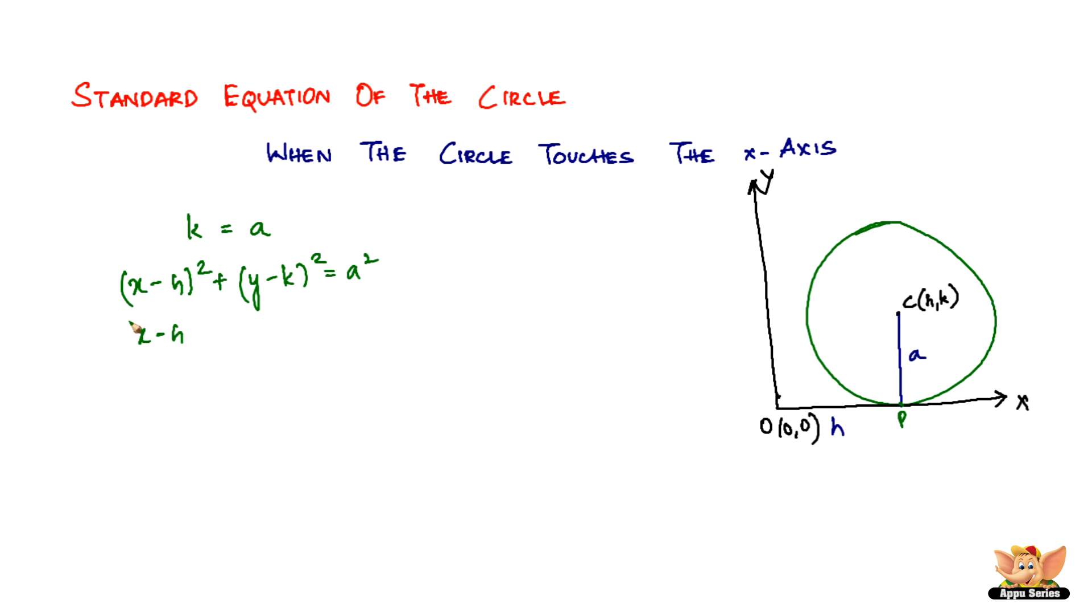x minus h the whole square plus y minus a the whole square. k is replaced by a equals a square. So now what happens when you expand x minus h the whole square? It becomes x square plus h square minus 2hx plus y minus a the whole square is y square plus a square minus 2ay, equal to a square.